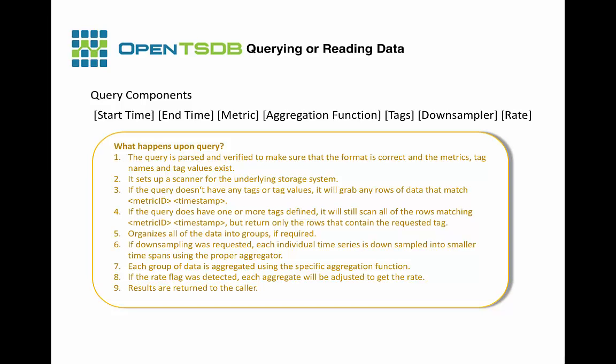What happens upon a query in OpenTSDB? First, the query is parsed and verified to ensure the format is correct and that the metric, tag names, and tag values exist. Then it sets up a scanner for the underlying storage system. If the query has no tags or tag values, it grabs any rows matching the metric ID and timestamp. If the query has one or more tags defined, it scans all rows matching the metric ID and timestamp but returns only the rows containing the requested tags. OpenTSDB then organizes all returned data into groups if required. If downsampling was requested, each individual time series is downsampled into smaller time spans. Then each group of data is aggregated using the specified aggregation function. If the rate flag was set, each aggregate is adjusted to get the rate. Finally, all results are returned to the caller.